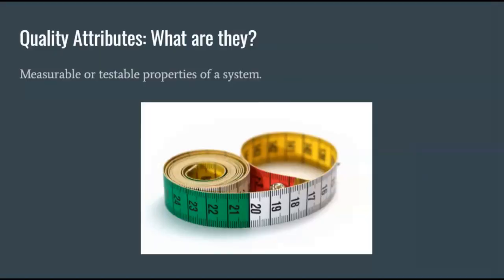What are Quality Attributes? Well, say you have a system — it could be a hardware system, a software system, it doesn't really matter. That system has certain properties, like how fast it is or how easy it is to use. Quality Attributes are the measurable and testable properties of that system, and how those properties satisfy the needs of its users.